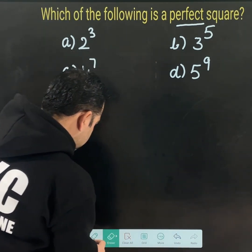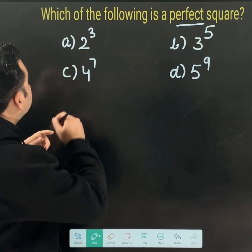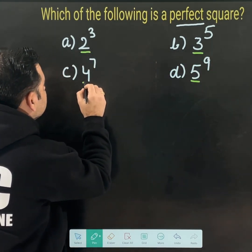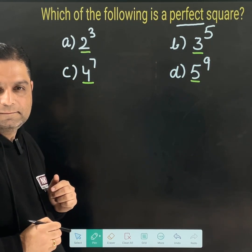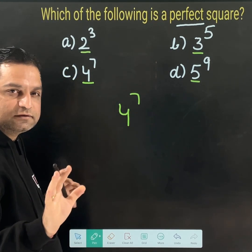Check the options very carefully. This is having 2 here, this is having 3, this is 5, and this is 4. But I observed here 4 to the power 7 is the answer.